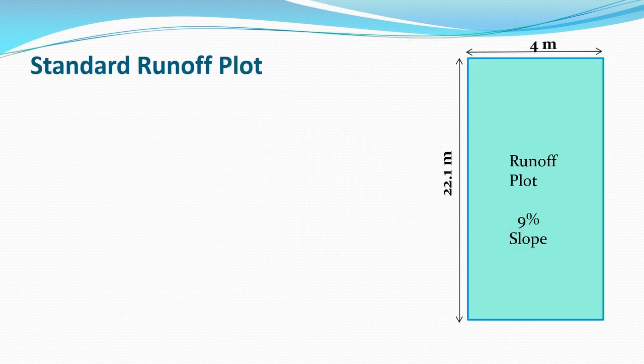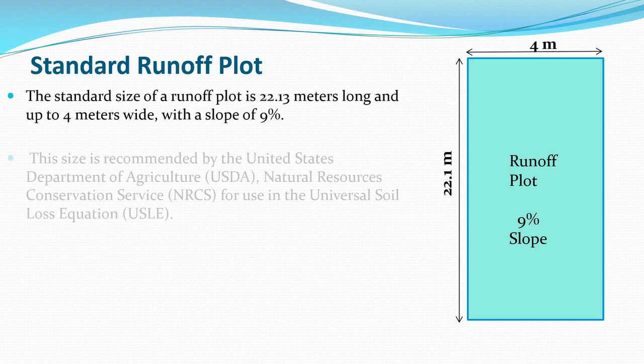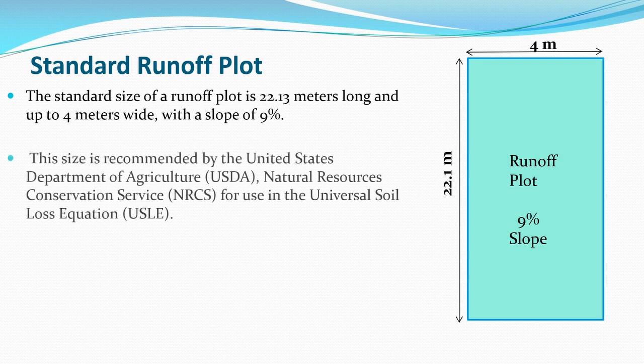The Standard Runoff Plot has a length of 22.1 meters, a width of 4 meters, and a slope of 9 percent. This plot is used in the estimation of the Soil Erodibility Index K. This size was recommended by the United States Department of Agriculture (USDA) Natural Resources Conservation Service (NRCS) for use in the Universal Soil Loss Equation.